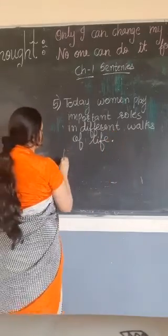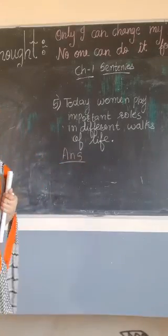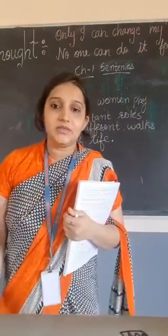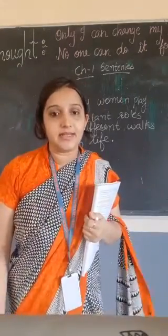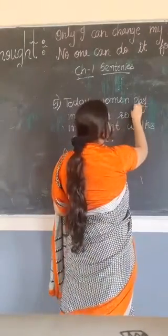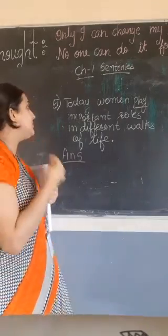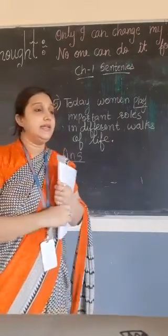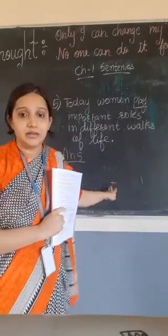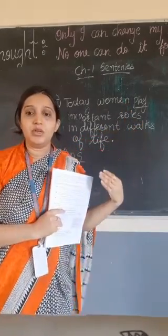Now this sentence we have to change into a question. As I told you, there is no helping verb in this sentence — can you see any helping verb? No. But there is a main verb, that is 'play,' which is an action verb. So in this way you have to see whether it is past. If it is 'played,' then you have to use 'did.' But if it is 'play,' so we will put 'does.'